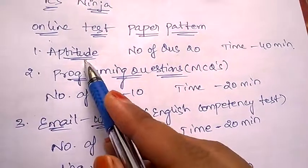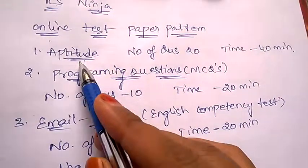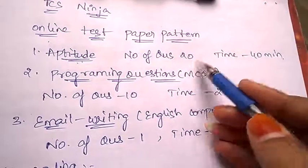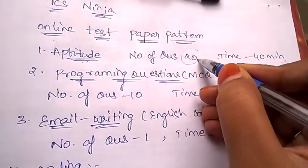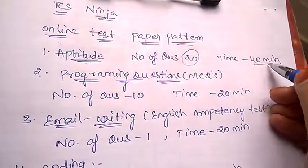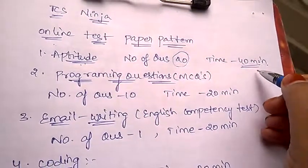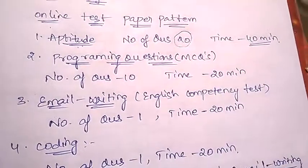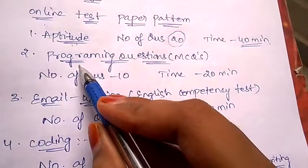First, they'll be asking questions on aptitude, that is quantitative aptitude. In quantitative aptitude, the number of questions will be 20, and for 20 questions they'll give 40 minutes.